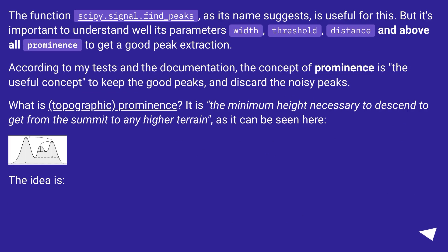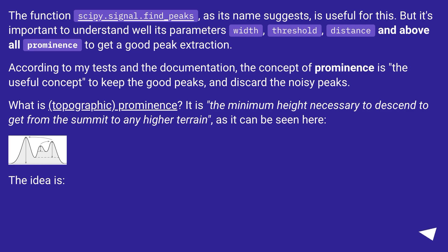The function scipy.signal.find_peaks, as its name suggests, is useful for this. But it's important to understand its parameters — width, threshold, distance, and above all prominence — to get a good peak extraction. According to my tests and the documentation, the concept of prominence is the most useful concept to keep the good peaks and discard the noisy peaks.